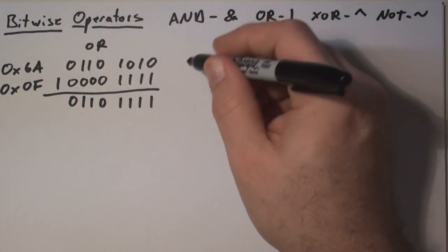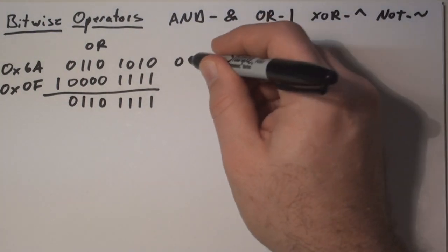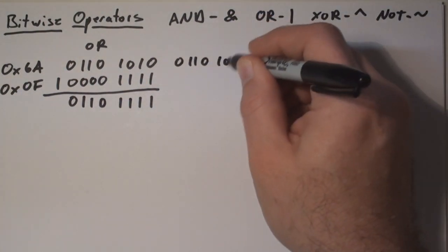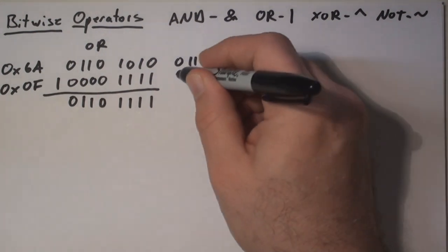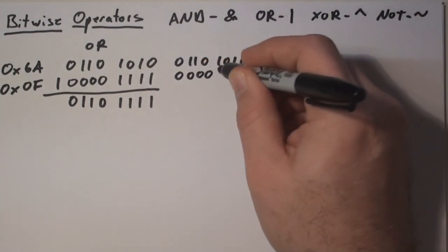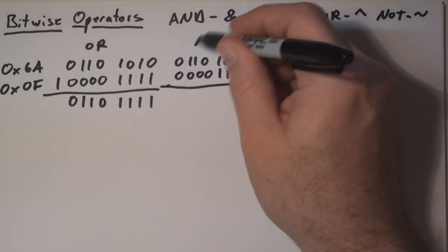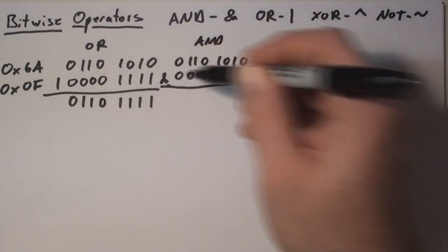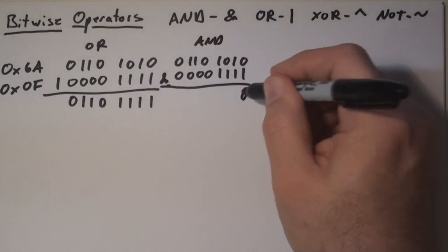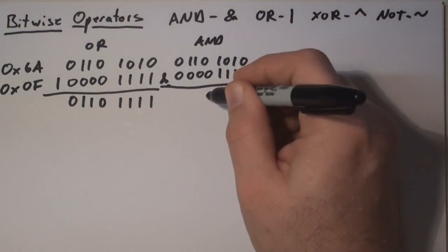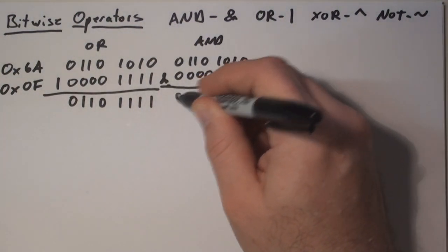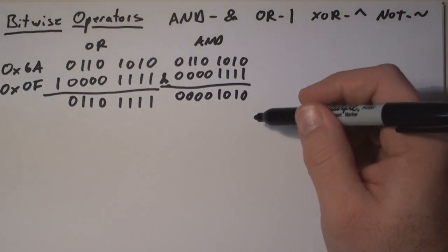In the second example, I'm going to use the same two values, 6A and 0F, but we're going to use AND operation. And again, this works like a two input AND gate, where one input is from the top line and the second input is from the bottom line. So an AND has a 1 output when both inputs are 1. So there's only two locations where both the top and the bottom line have a 1 in the column, and they get a 1, all other instances get a 0.